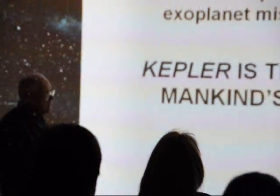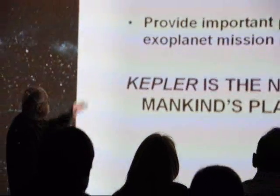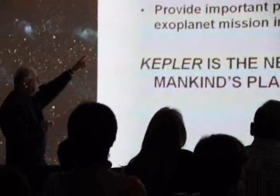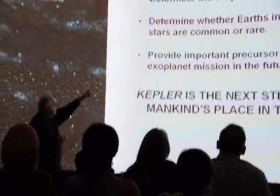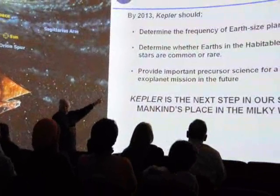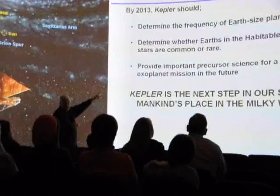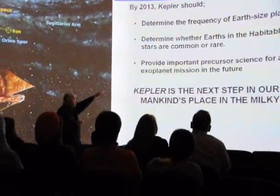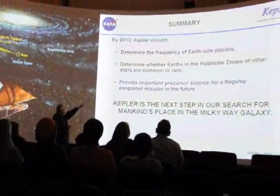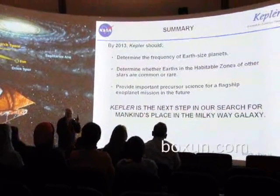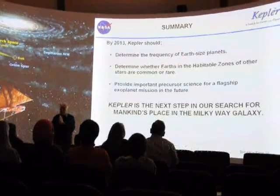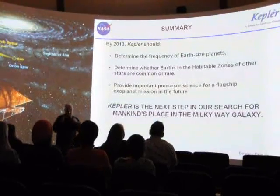So basically, in three years we determine the frequency of Earth-sized planets. We find out whether Earths are common in our galaxy. Life may be common in that case. And what we do is we get the information that we need to build this next mission.